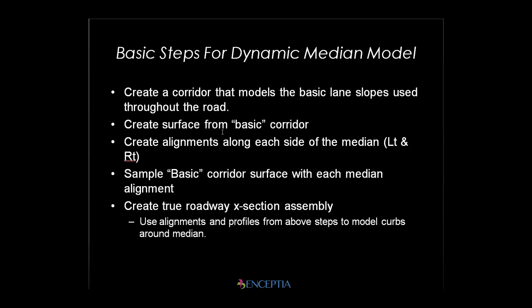We're going to create a surface from that basic corridor, and I have alignments created on both the left and the right side of all my medians. I'm going to take those alignments and sample this basic corridor surface to get profiles. That's going to give me profiles that are dynamic, so as the center line profile adjusts up and down, it's going to change the corridor. The corridor is going to get updated, the surface is going to get updated, and then the profiles sampled from that surface will be updated. Then I'm going to tie my second corridor, using these alignments and profiles as targets so that my median is always tied together.